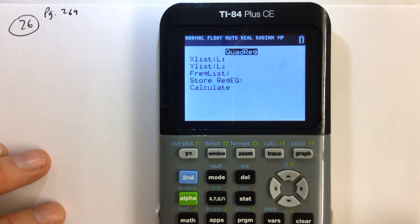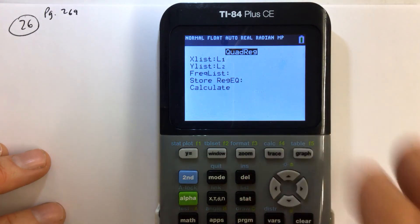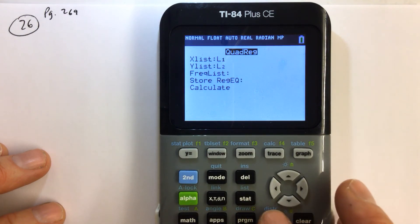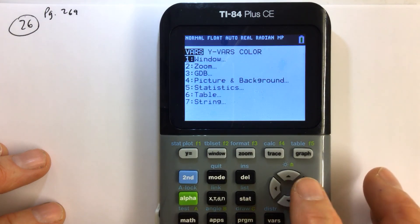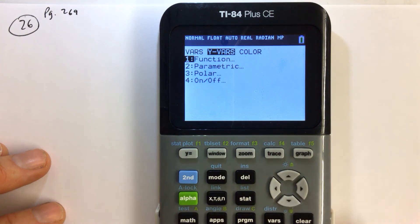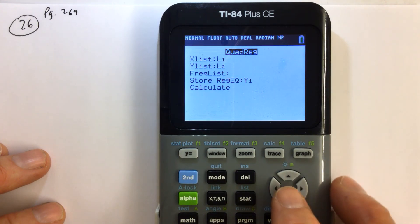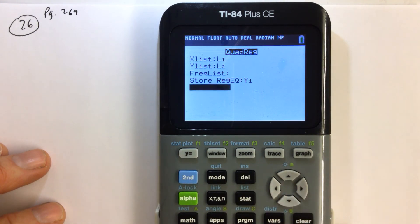And then now we want to store that equation in y1. So to get y1 on our screen, we go through that again, hit vars, right arrow for y variables, enter for function mode, and enter to select y1. That puts the y1 right where we want it. And then we hit the down arrow or enter, and then enter for calculate.